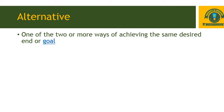Alternative means options — whatever the given ways you use when taking a decision, there are some different alternatives. One of the two or more ways of achieving the same desired end or goal is called an alternative. The decision is one, but the multiple options from which you choose one — those are your alternatives.